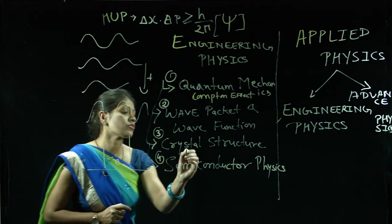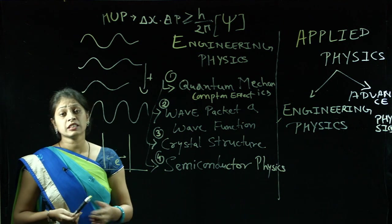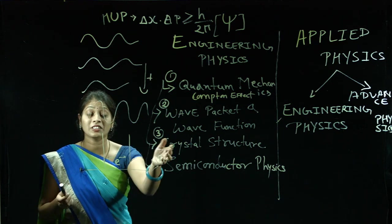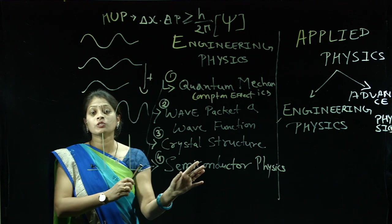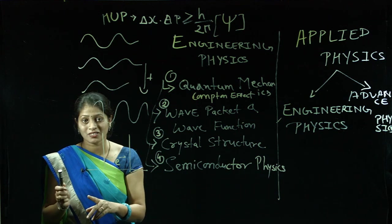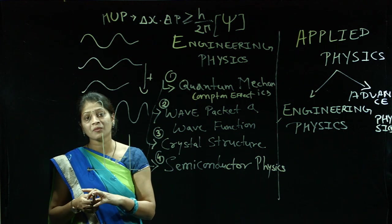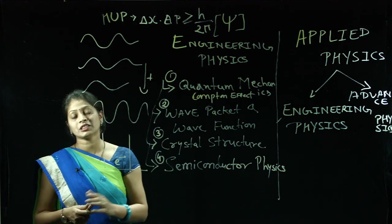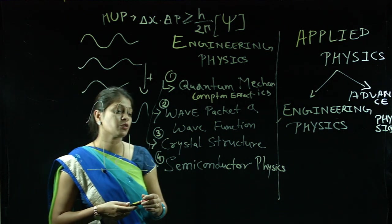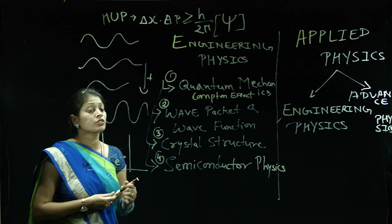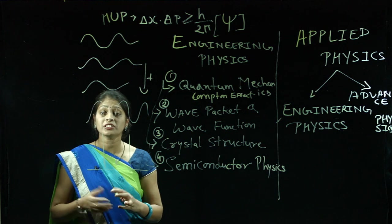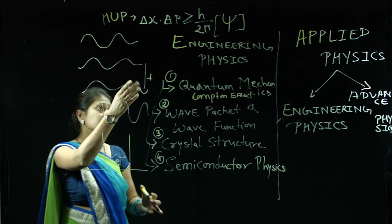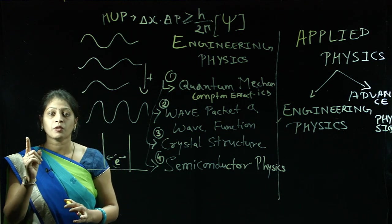As we complete Wave Packet and Wave Function, the third unit will be Crystal Structure. Crystal Structure — as the name says 'crystal.' In general understanding, we might say all transparent things are crystals, but this unit challenges that concept. Crystal has a different meaning and significance. Any solid in which atoms are arranged in a regular and periodic manner is called a crystal. We will discuss the fundamental of crystal — what crystal structure is, how it is formed, what the basic requirements are, and the types of crystal structure. There are seven types, but for Engineering Physics we focus on the cubic unit cell.